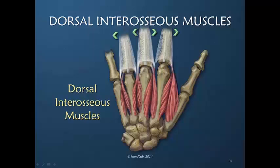As we know, the dorsal interosseous muscles are responsible for abduction or spreading of the fingers. Commonly, there is no insertion of a dorsal apparatus muscle on the little finger. The abductor digiti quinti assumes this function on the little finger. Looking carefully, we can see the insertions into bone that are providing abduction, and these other insertions into the dorsal apparatus can assist with that abduction as well.